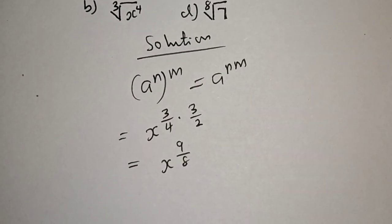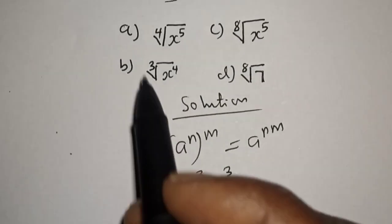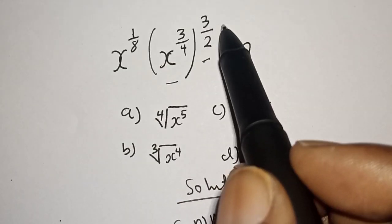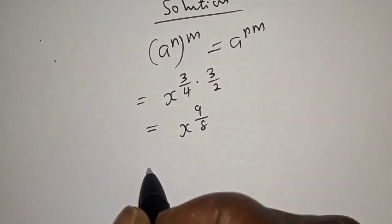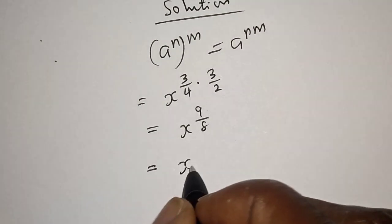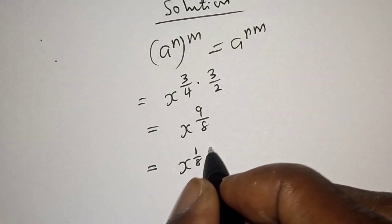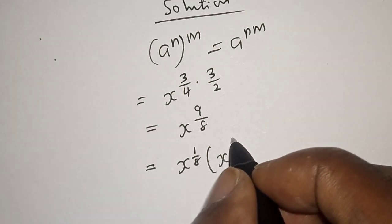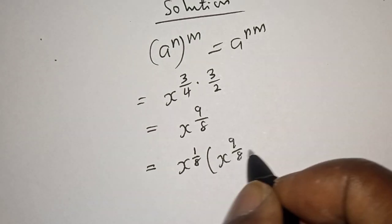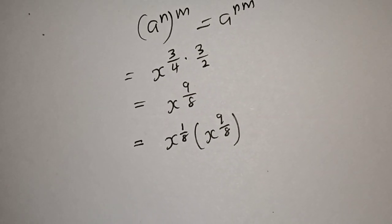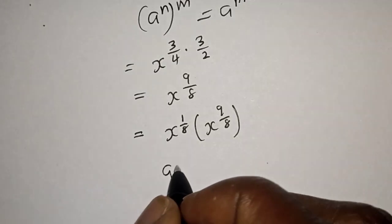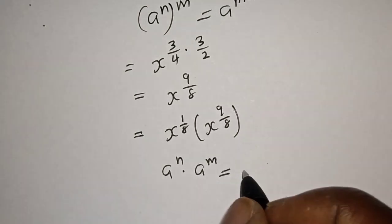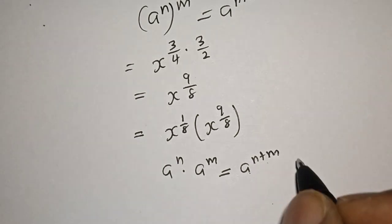Now we have s raised to power 1 over 8, brackets s raised to power 9 over 8. From the same rule, if you have a raised to power n multiplied by a raised to power m, this is equal to a raised to power n plus m. So we apply that here: s raised to power 1 over 8 multiplied by s raised to power 9 over 8 equals s raised to power 1 over 8 plus 9 over 8.